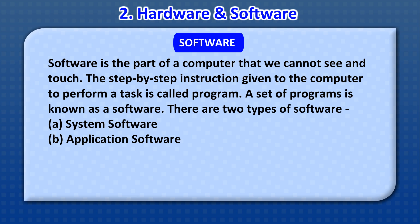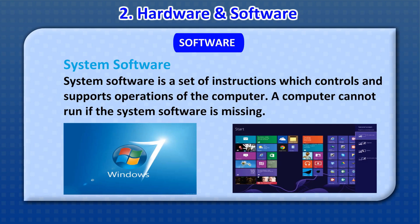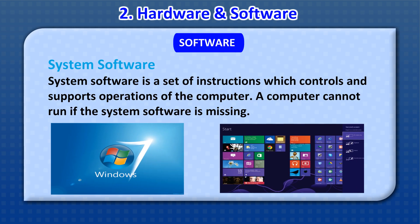There are two types of software: A. System software and B. Application software. System software is a set of instructions which controls and supports the operations of the computer. A computer cannot run if the system software is missing.